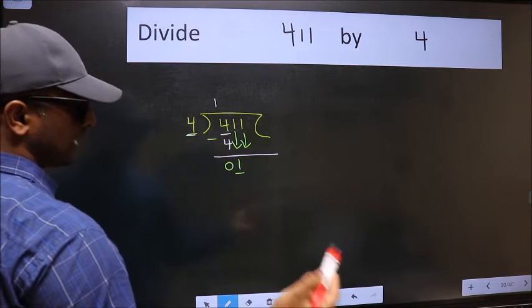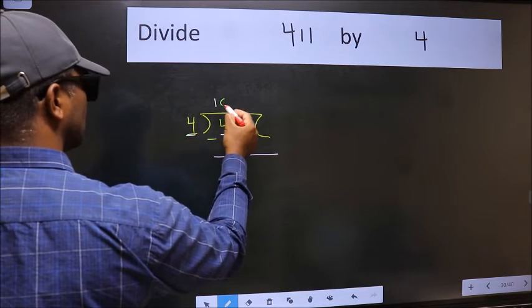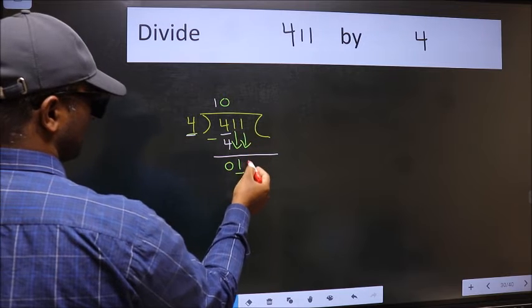The rule to bring down second number is we should put 0 here, then only we can bring this number down.